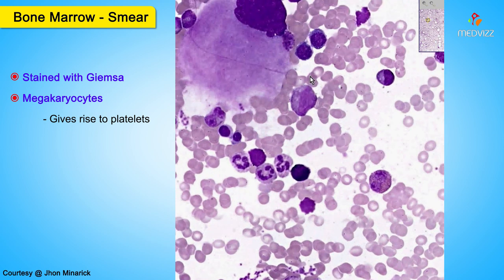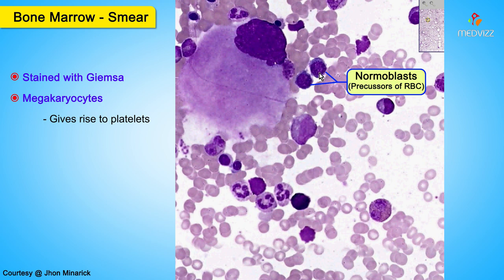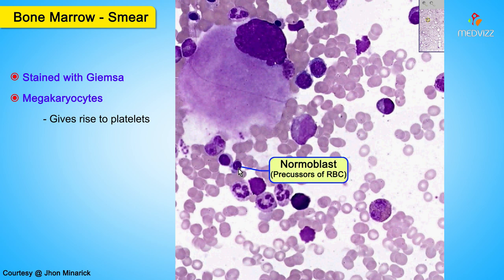The cells which have a round nucleus and a very dark blue cytoplasm are the precursors to the red cells. These are called normoblasts, and they generally mature from very large cells with a lot of cytoplasm to very small cells in which the nucleus is eventually lost and a mature red cell is then produced. Notice that as a cell matures, the nucleus gets smaller and darker and eventually is extruded.